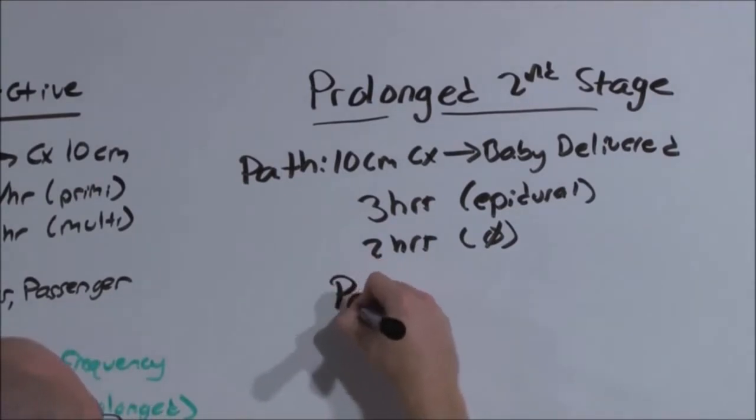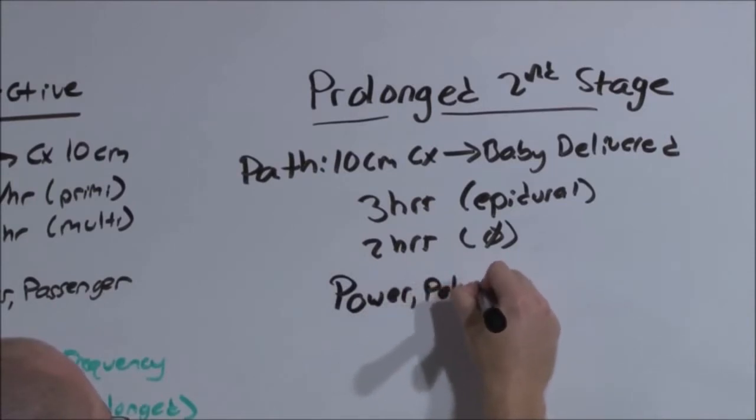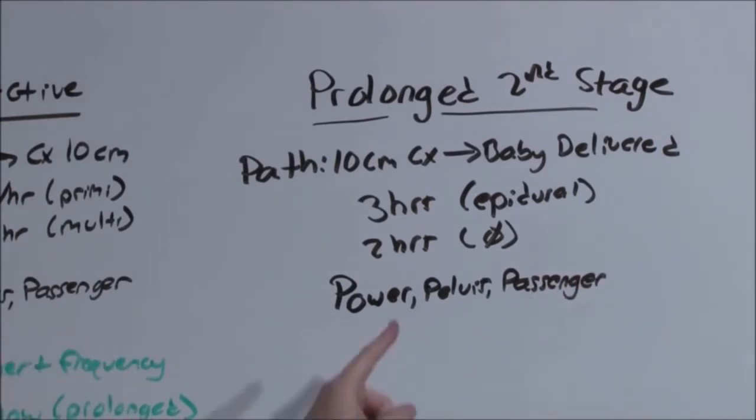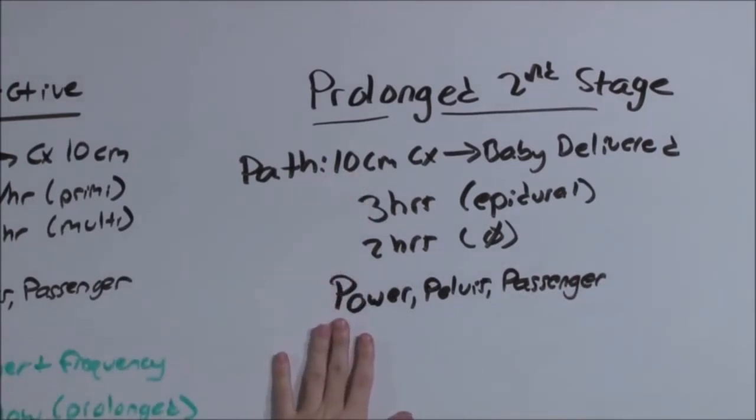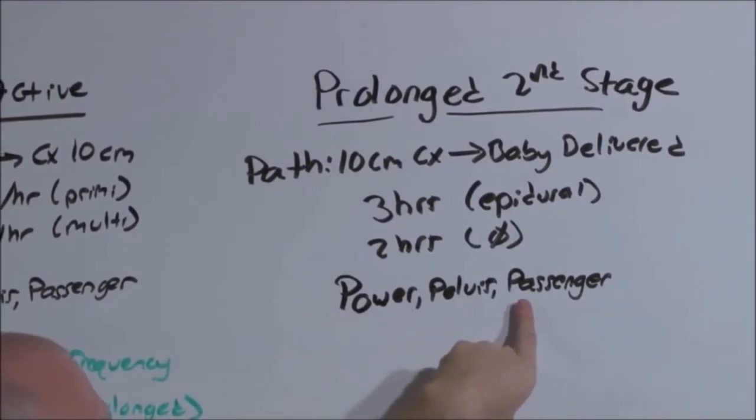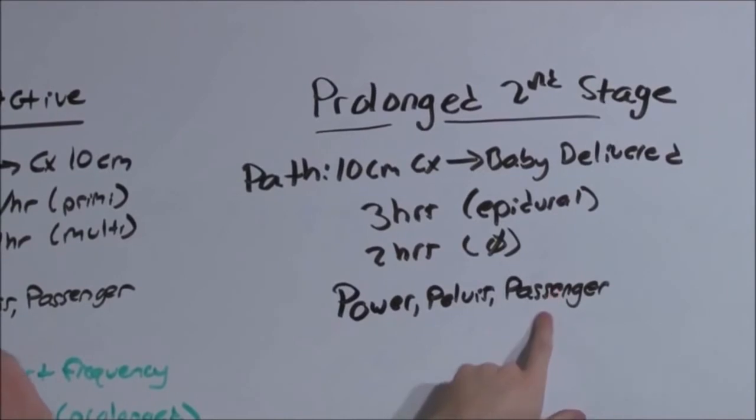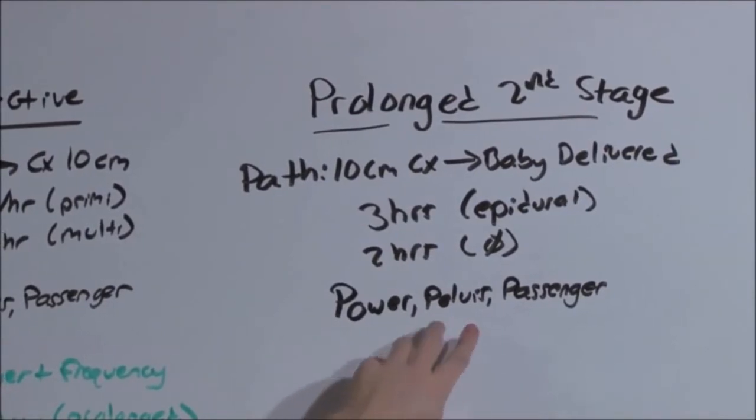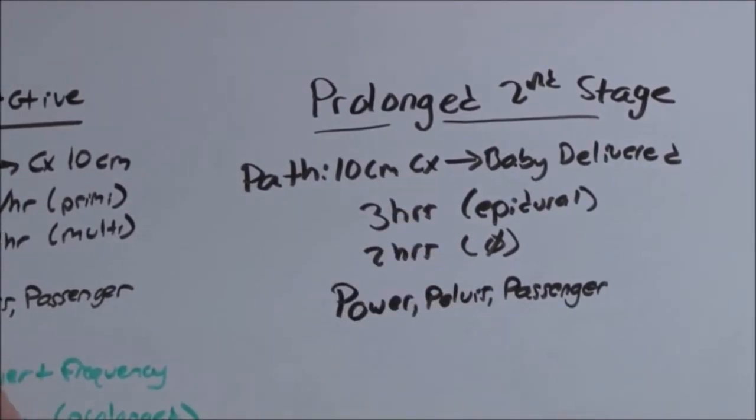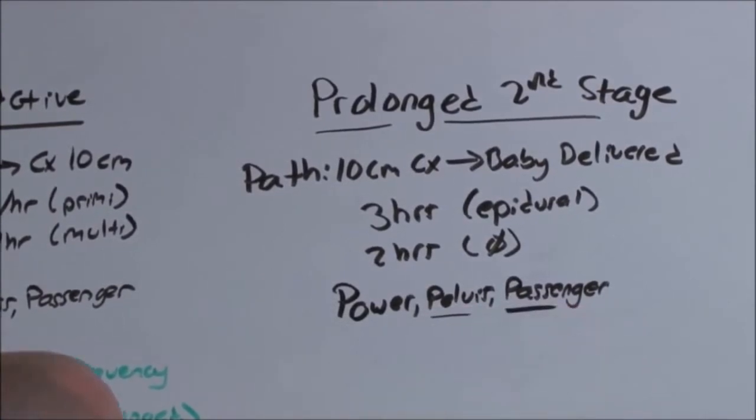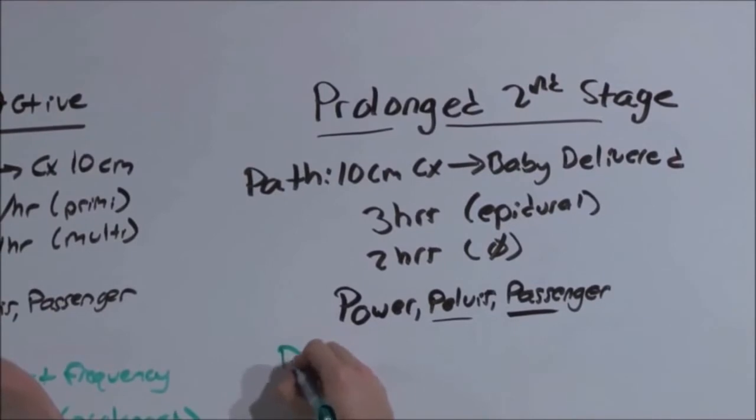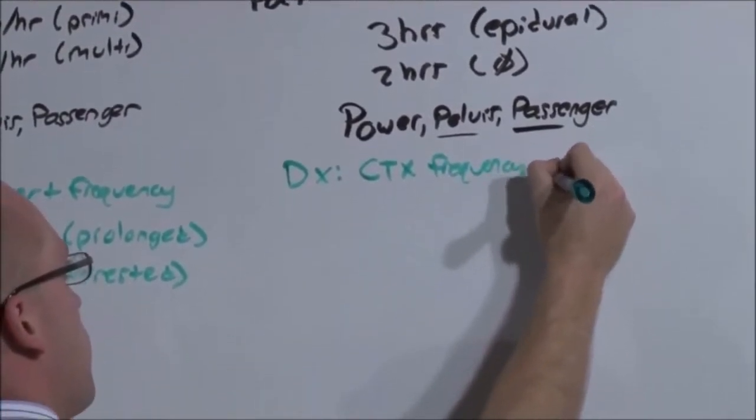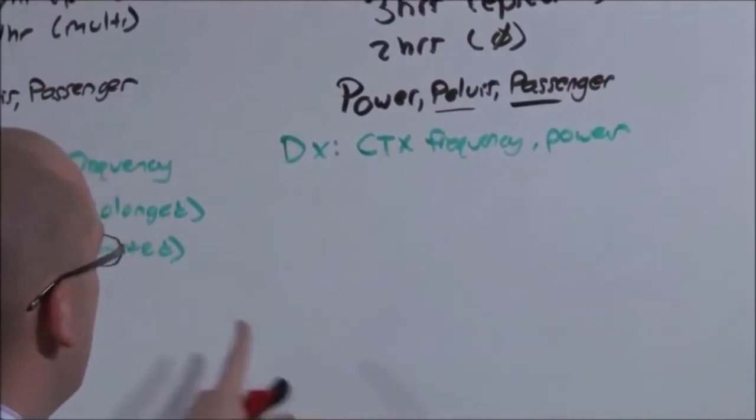We're always going to consider the power, the pelvis, and the passenger. But at this point, after maximal cervical dilation, chances are it's no longer a power issue. It's probably the pelvis or the passenger, and that is you can't fit a 12-centimeter baby through a 10-centimeter hole. You can't fit the 12-centimeter baby through an 8-centimeter tube. So if there is problems with prolonged second stage, it's probably going to be with the pelvis or the passenger. But the only thing we can do is assess her contractions. So the contraction frequency and power is assessed, just as we had done previously.